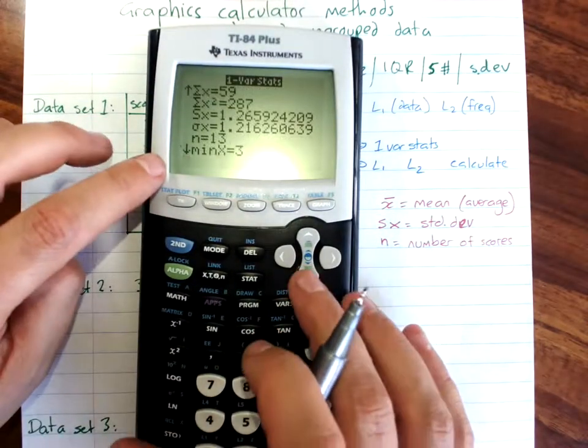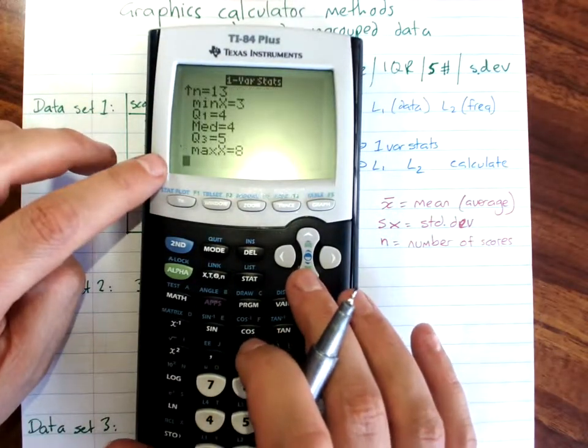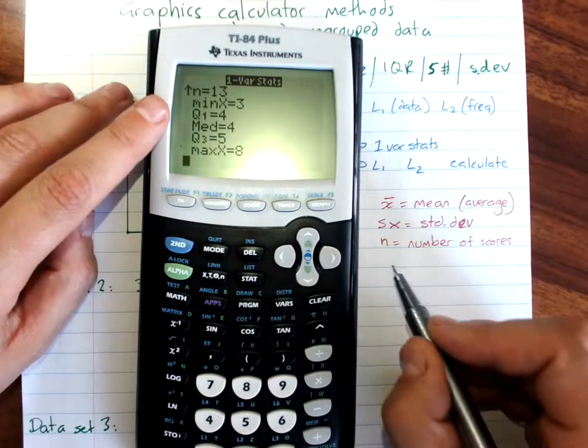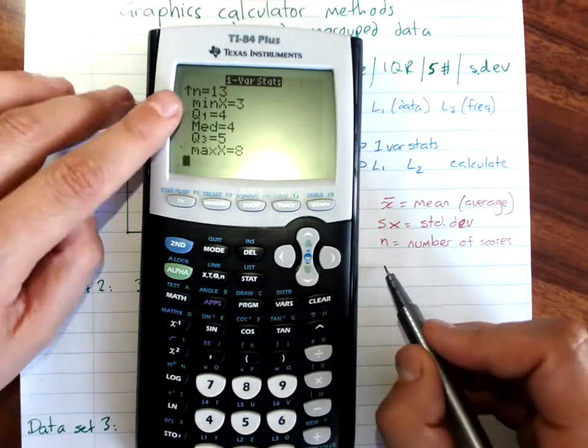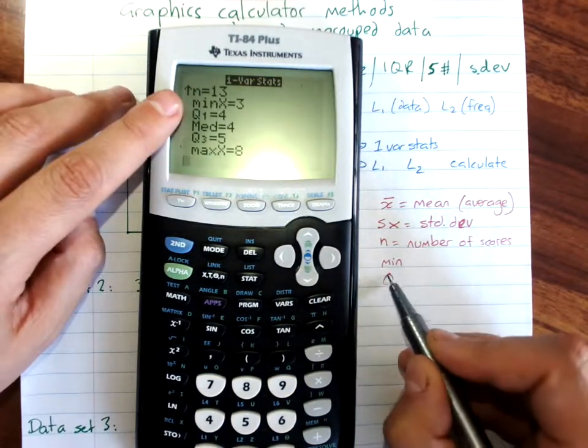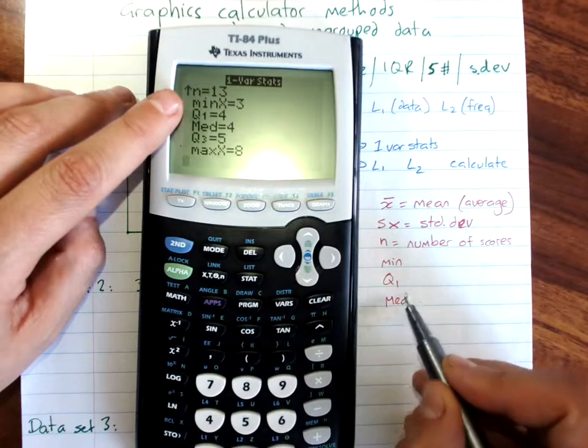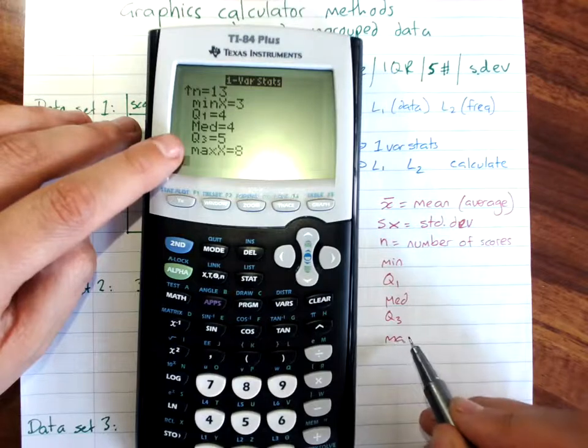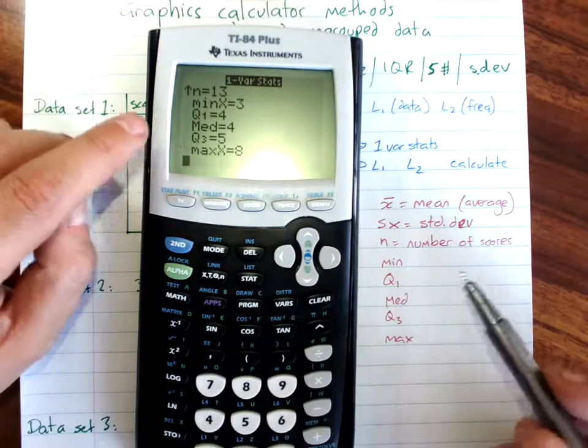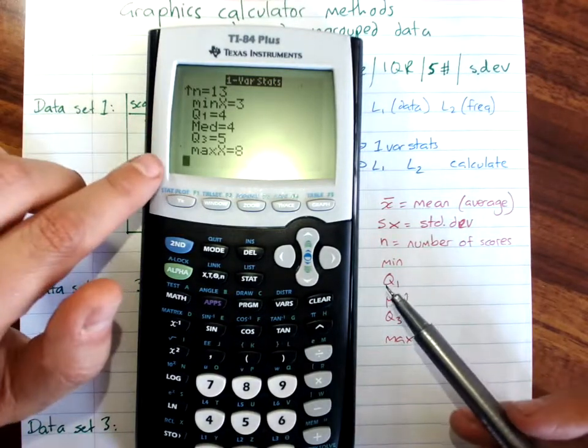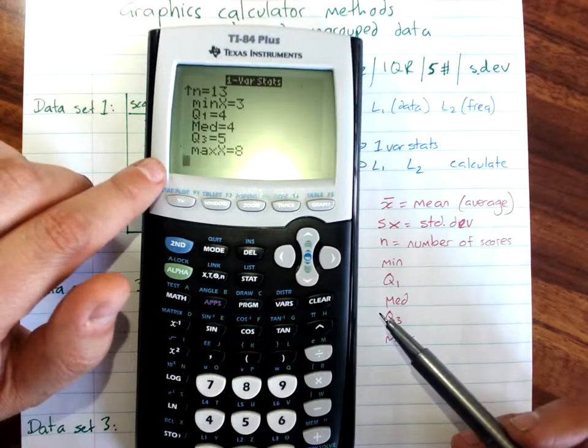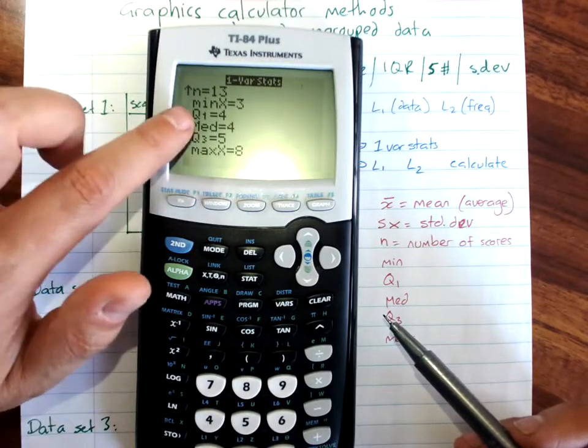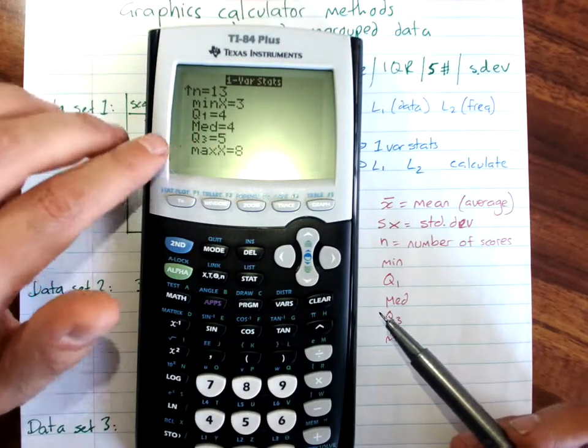When we scroll down, what we get is your five number summary. Min, Q1, median, Q3, the two quartiles, and maximum. So everything you might need for a five number summary or a box plot or the range, maximum minus minimum, or the median, it's all in there.